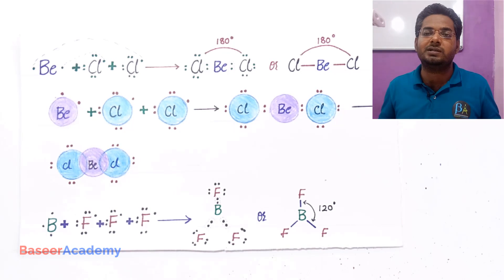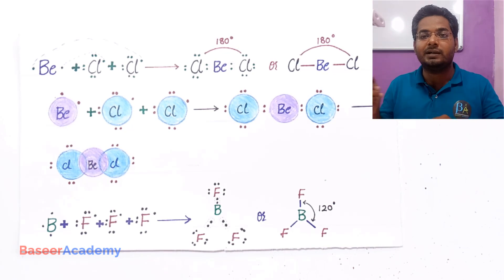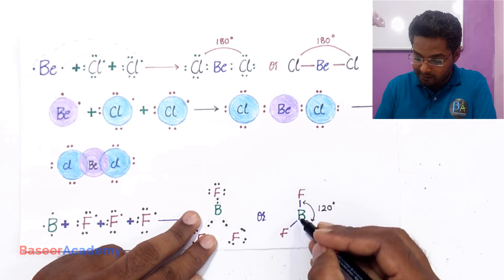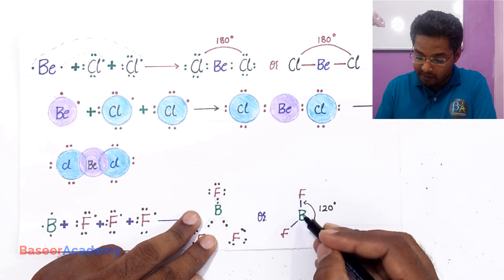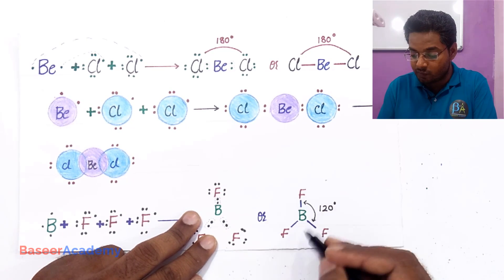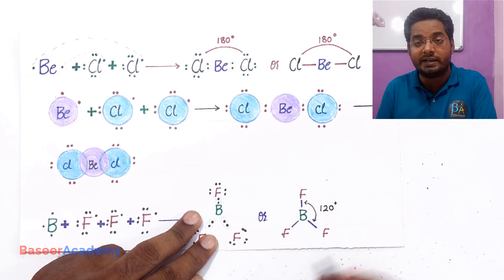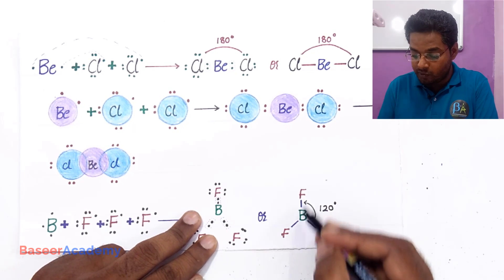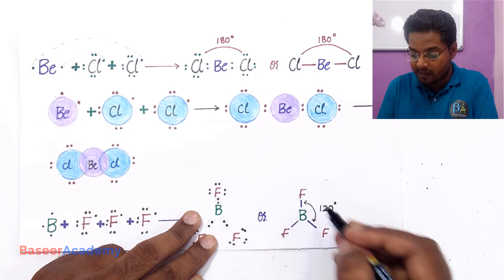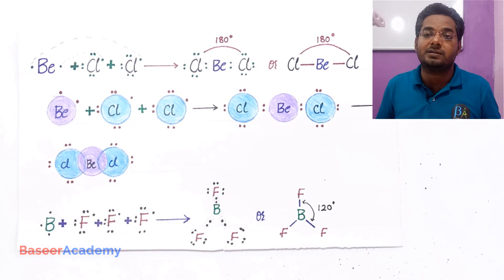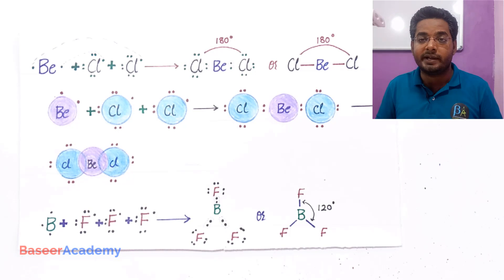Central atom is the atom to which all other atoms are connected through covalent bonds. Now, the angle between fluorine, boron, and fluorine is 120°. But why this angle between fluorine, boron, and fluorine is 120° is something that electronic theory of valence could not explain.